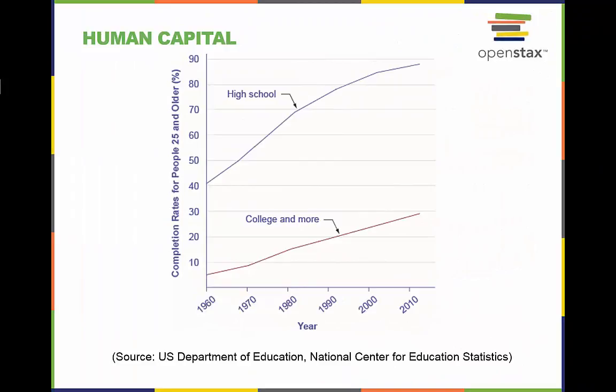Rising levels of education for persons 25 and older show the deepening of human capital in the U.S. economy. Even today, relatively few U.S. adults have completed a four-year college degree, so there is clearly room for additional deepening of human capital to occur.